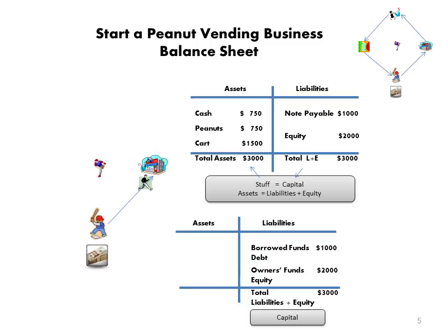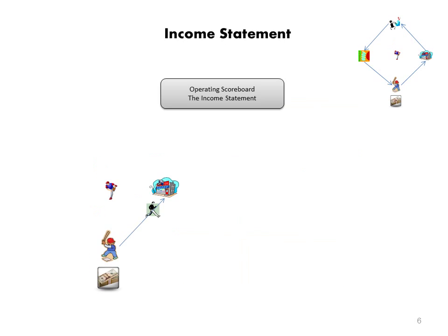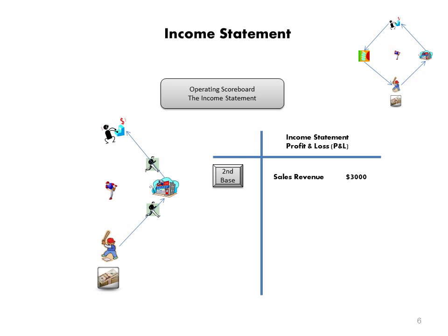First base is our stuff — assets. Home is our liabilities. These things have to equal. This is a stock — this is what we're beginning with. Now we're going to go to second base and begin operations, and we need a scoreboard for our operations. Moving to second base, we're going to make sales. Here we're going to have what we call an income statement — what sales revenue or gross income are we generating? This is sometimes called a profit and loss statement.